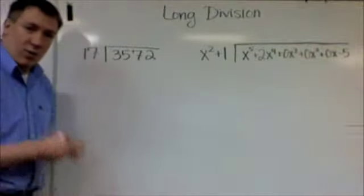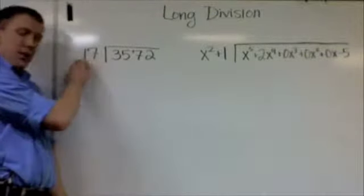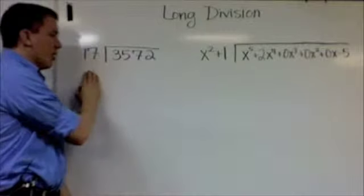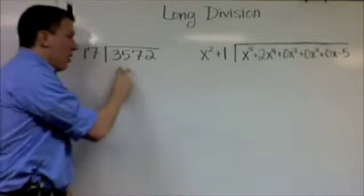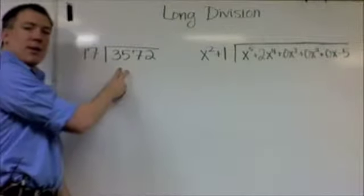So here is how long division works. Once again, first thing you do is you ask, how much does 17 go into? And you just start going down the list. So you look at 3, doesn't work, go to 35.